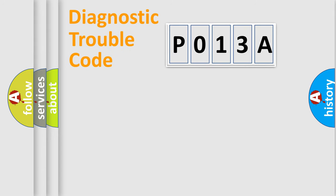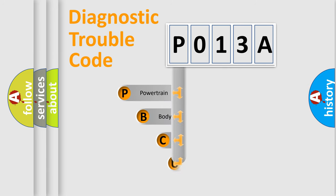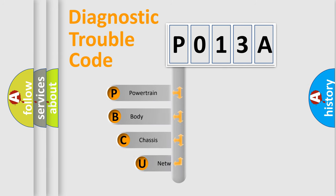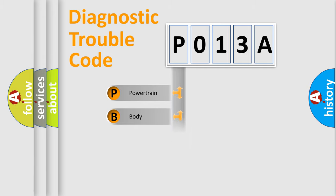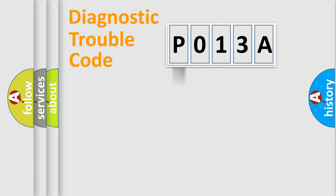Let's do this. First, let's look at the history of diagnostic fault code composition according to the OBD2 protocol, which is unified for all automakers since 2000. We divide the electric system of the automobile into four basic units: Powertrain, body, chassis, network.